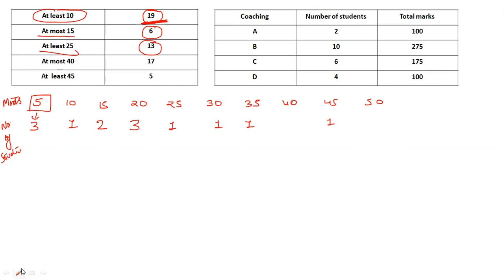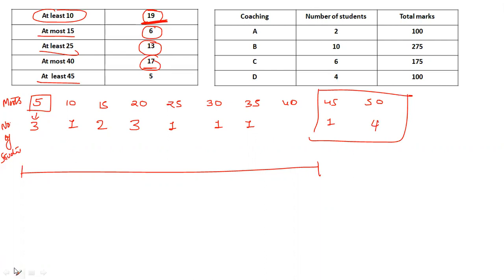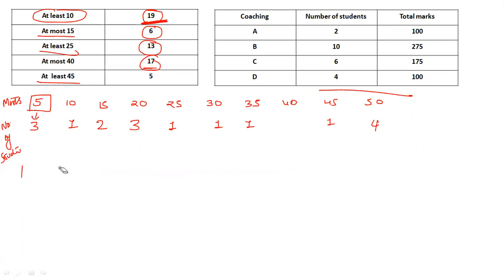'At most forty' means up to forty, so the remaining value here is seventeen. What is left is five, and four will go here. 'At least forty-five' means we have five students — you can see forty-five plus fifty gives five students, which matches. Our total should be twenty-two students. The count: three plus one is four, plus two is six, plus three is nine, plus ten is eleven, plus two is thirteen, plus four is seventeen, plus five is twenty-two. ✓